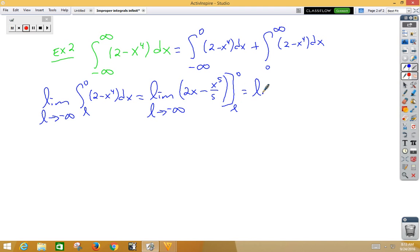So now we have the limit as l approaches negative infinity. If we plug in our 0 first, we're simply going to get 0 minus, if we plug in our l, we get 2l minus l to the 5th power over 5. Well, again, we're plugging in an infinity here. So when I plug in an infinity, I'm going to end up with negative infinity because of this negative, and again, it diverges.